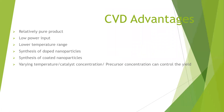Coming to the advantages of chemical vapor deposition: it is widely used in industries, and it gives a relatively pure product. It requires low power input and a lower temperature range. We can synthesize doped nanomaterials as well as coated nanomaterials using CVD. By varying the temperature, catalyst concentration, and precursor concentration, we can control the yield of nanomaterials.